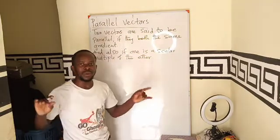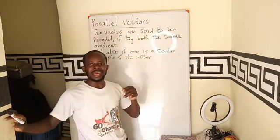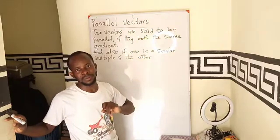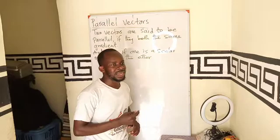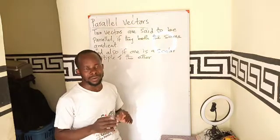Or better still, we can say that one of the vector is a scalar multiple of the other. If one of the vector is a scalar multiple of the other, then we can say that the two vectors are parallel.